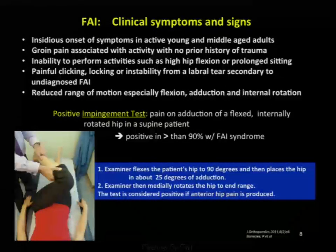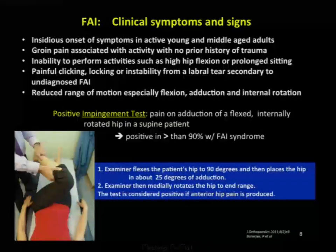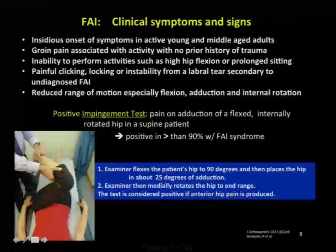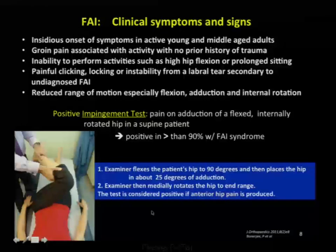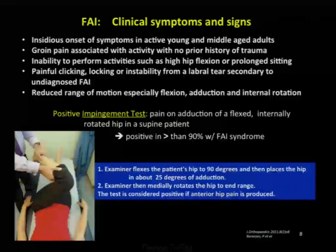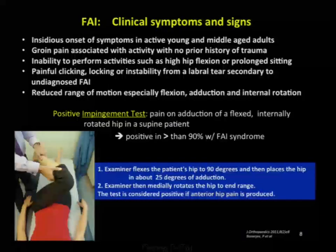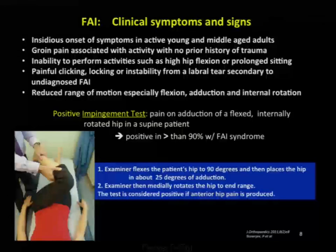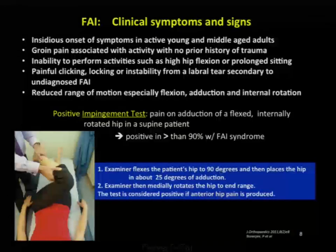There will be reduced range of motion, especially flexion, adduction, and internal rotation. The impingement test involves pain on adduction of a flexed, internally rotated, supine patient. Studies have shown that patients with a positive impingement test may have FAI up to 90 percent of the time.